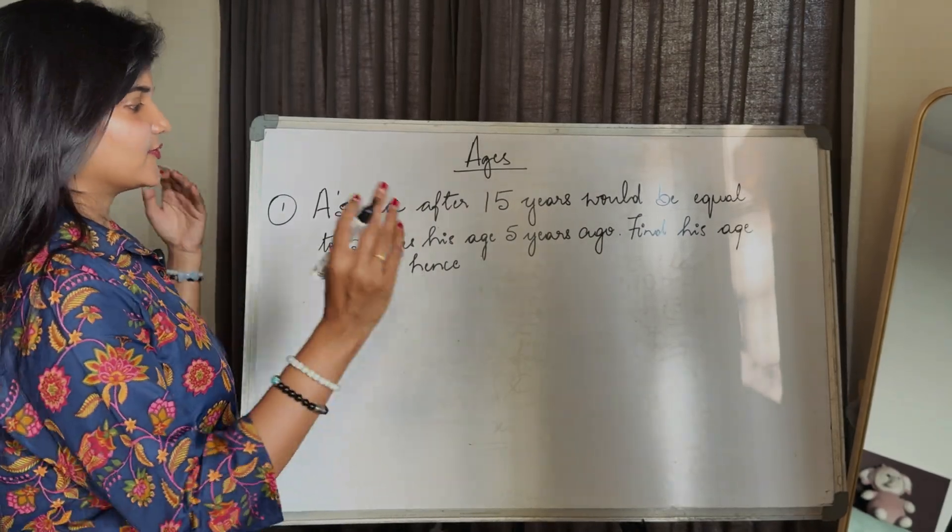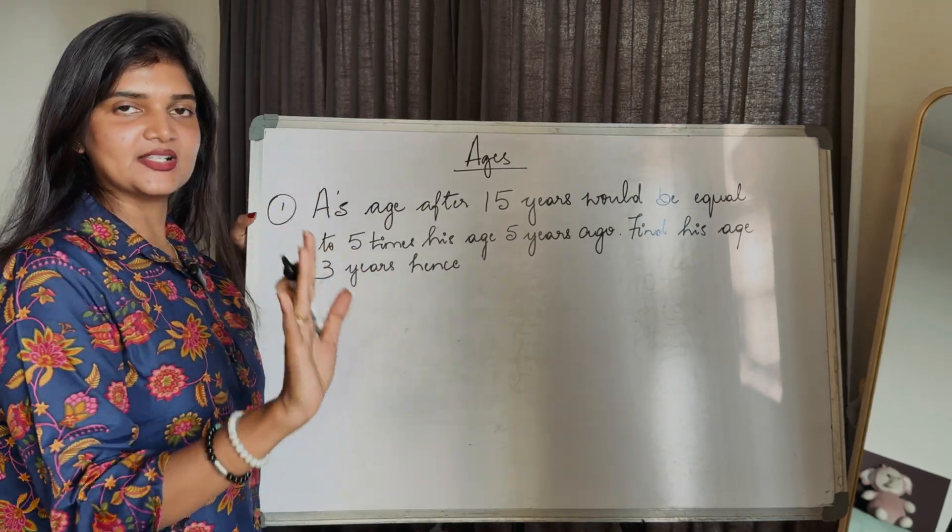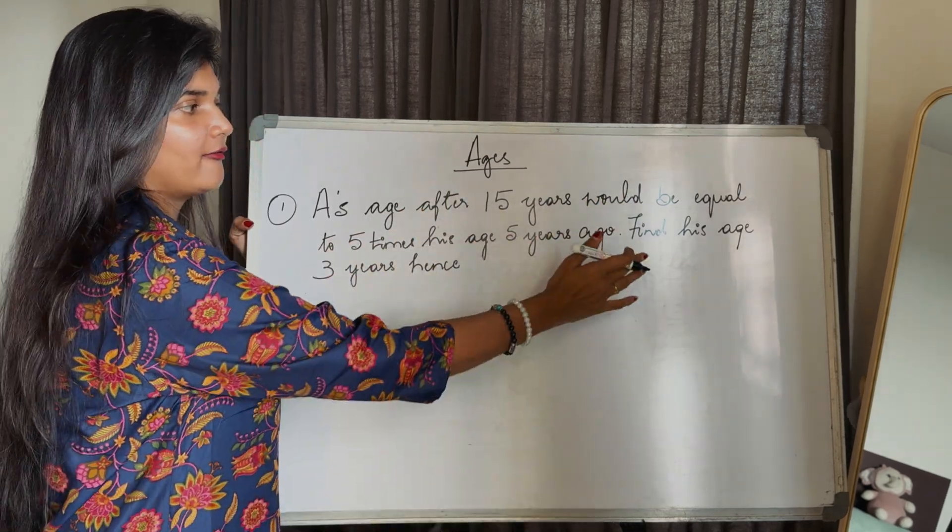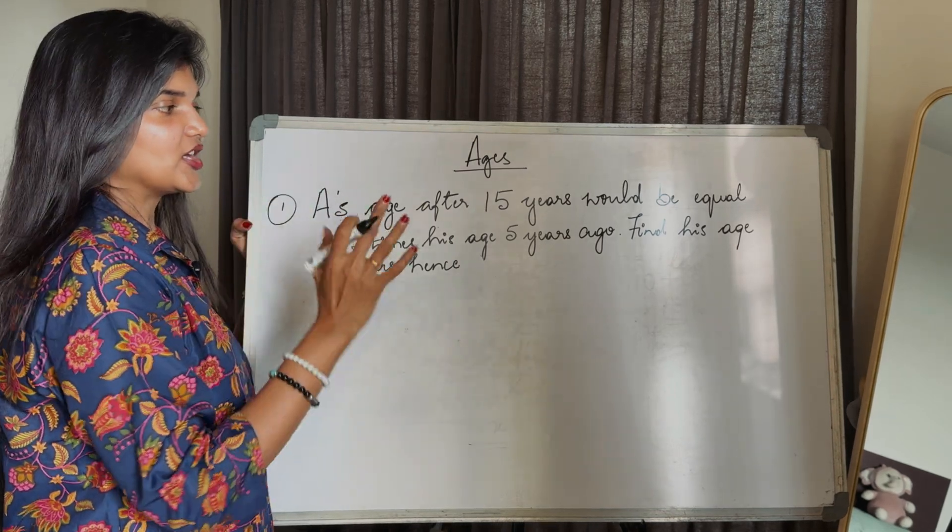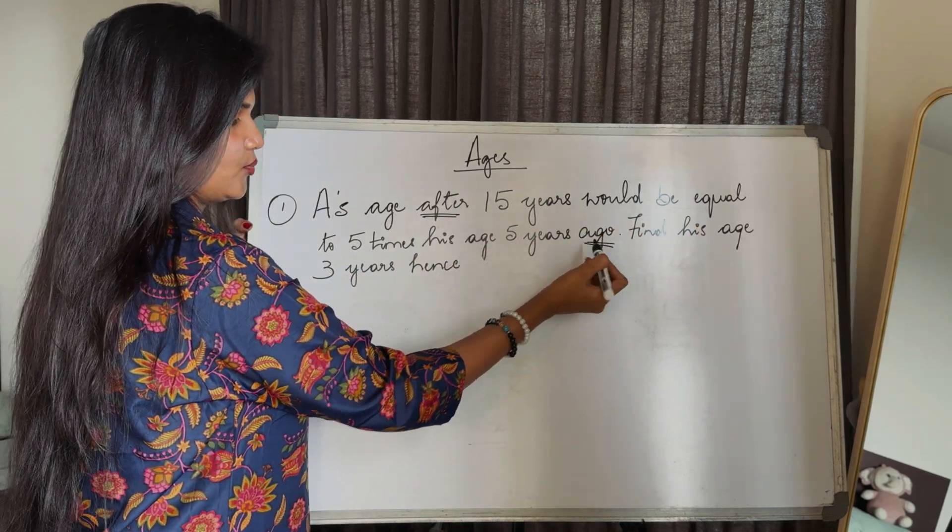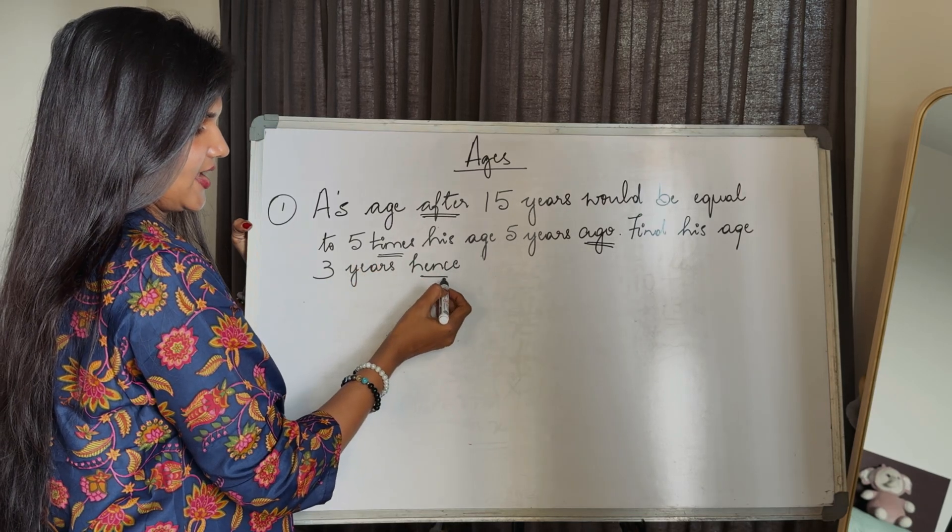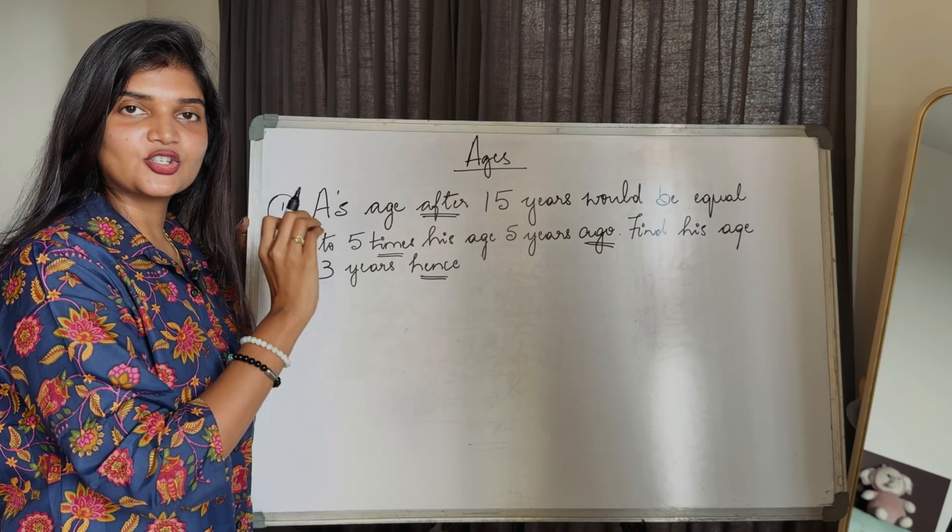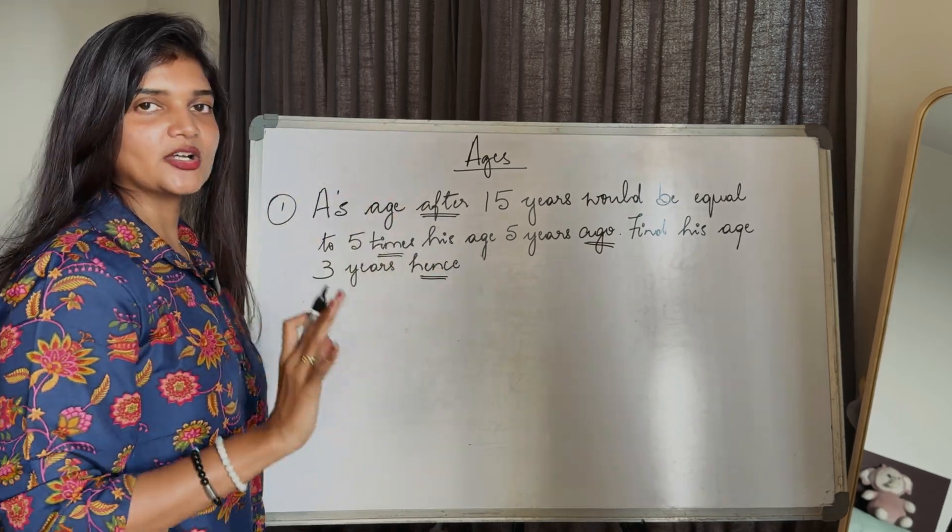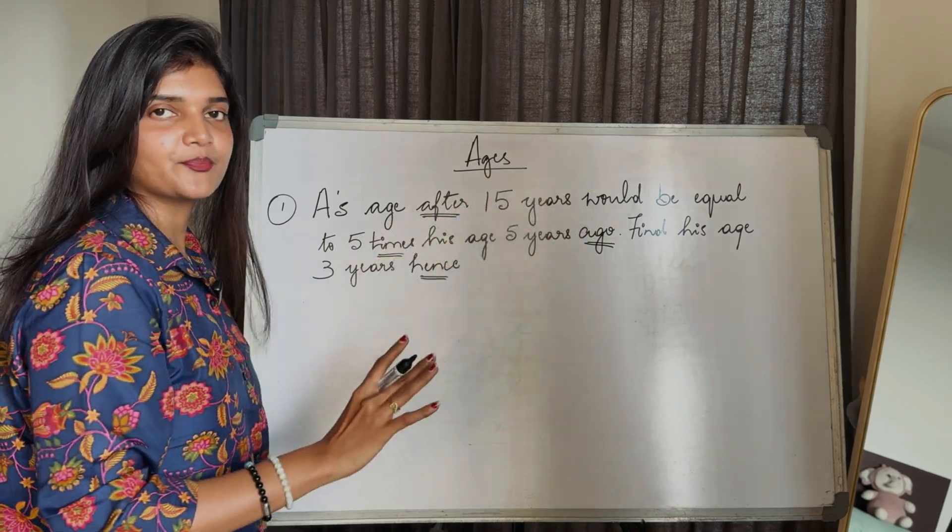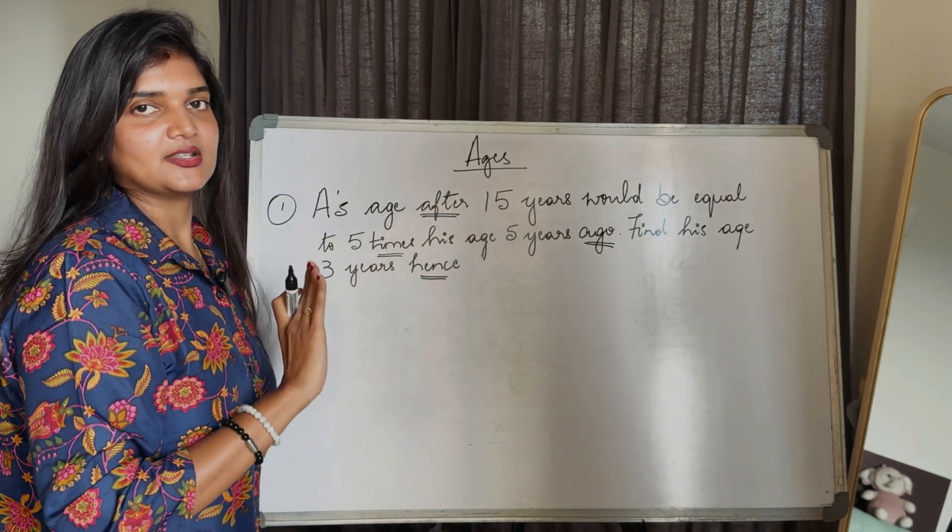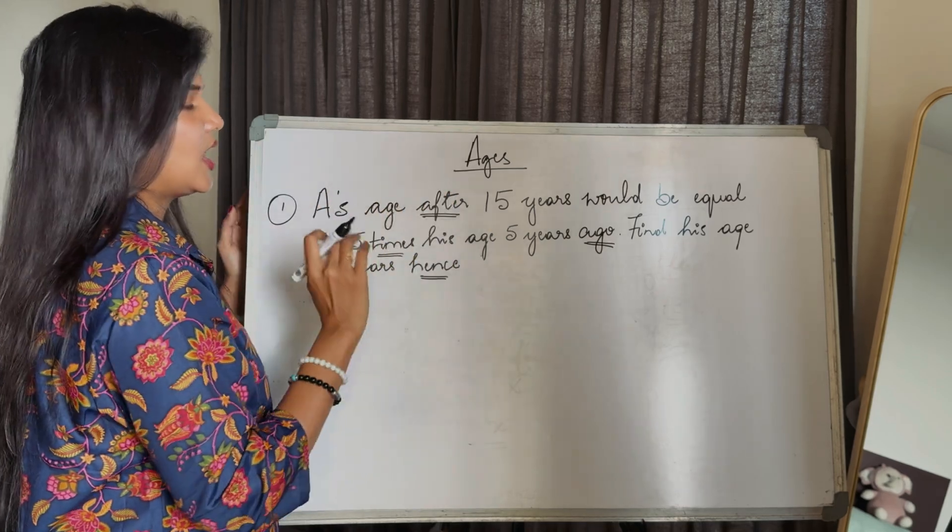Let's start solving the problems. Here is our first question: A's age after 15 years would be equal to 5 times his age 5 years ago. Find his age 3 years hence. You have to look for keywords like after, ago, times, and hence. Before that, when you look at a question, first what you have to do is divide the question.